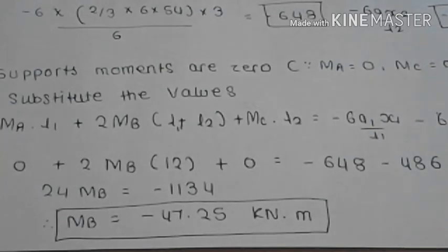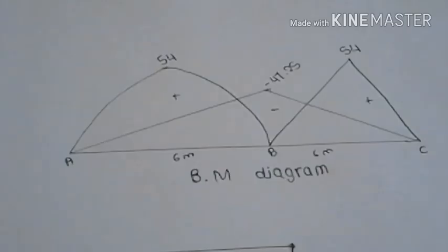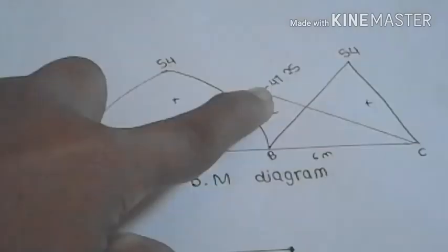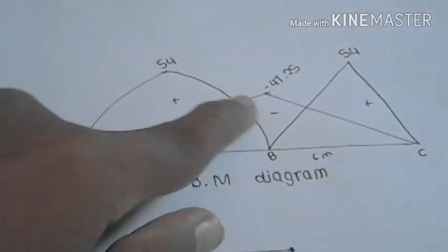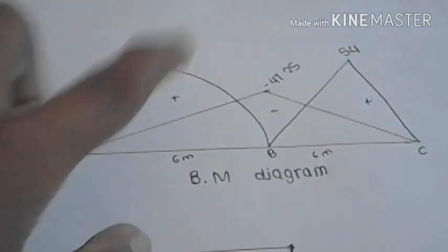Now we will substitute this value into the diagram, bending moment diagram. So as we stated, minus 47.25 is in minus. So this portion is in minus, this in plus and this is in plus.